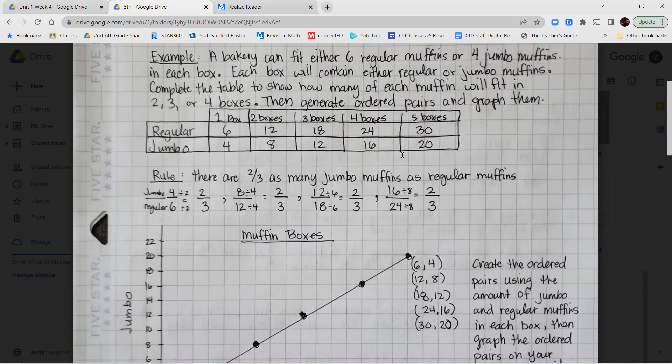So we created our data table. We have the regular muffins and we have the jumbo muffins and how much is going to fit in one box, two boxes, three boxes, four boxes, and I extended it out even to five boxes. So in one box, there's six regular or four jumbo.